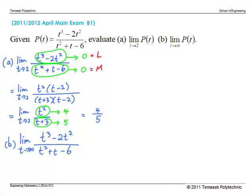In part (b), taking the limits of numerator and denominator separately gives infinity in both. Since both limits are not finite, we cannot use the division rule. We solve this by considering the leading terms t³ and t². The leading terms are those with the highest exponent. Since the leading term in the numerator has a higher power than in the denominator, t³ dominates and increases faster than t², so the overall answer is infinity as t goes to infinity.